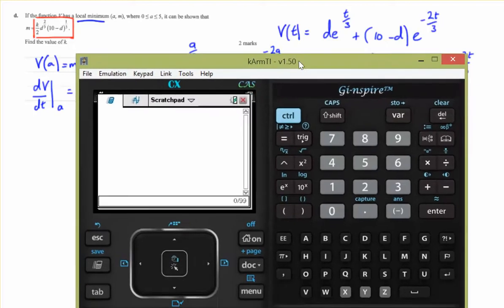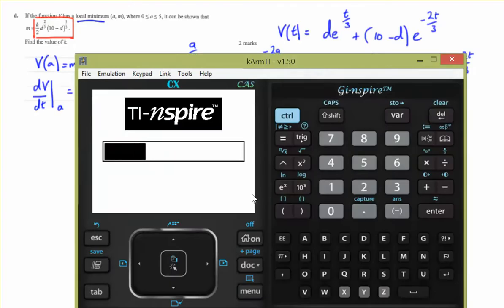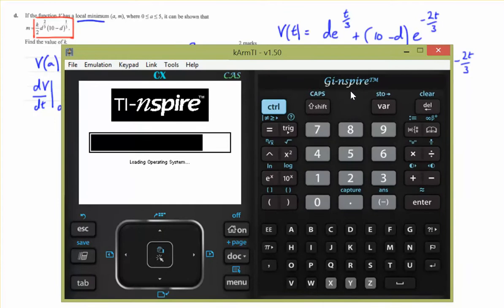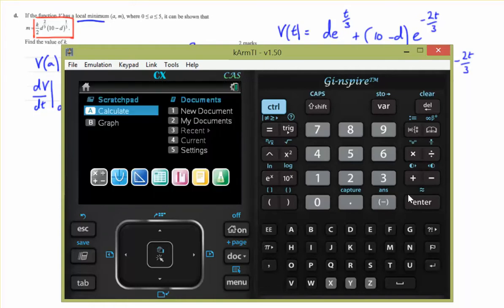Let's go through that process. We need to define V of T. So let's do that. Define V of T equals D times E to the power of T on 3. Oh, that one's glitched out. Let's try again. So we'll go through that process.